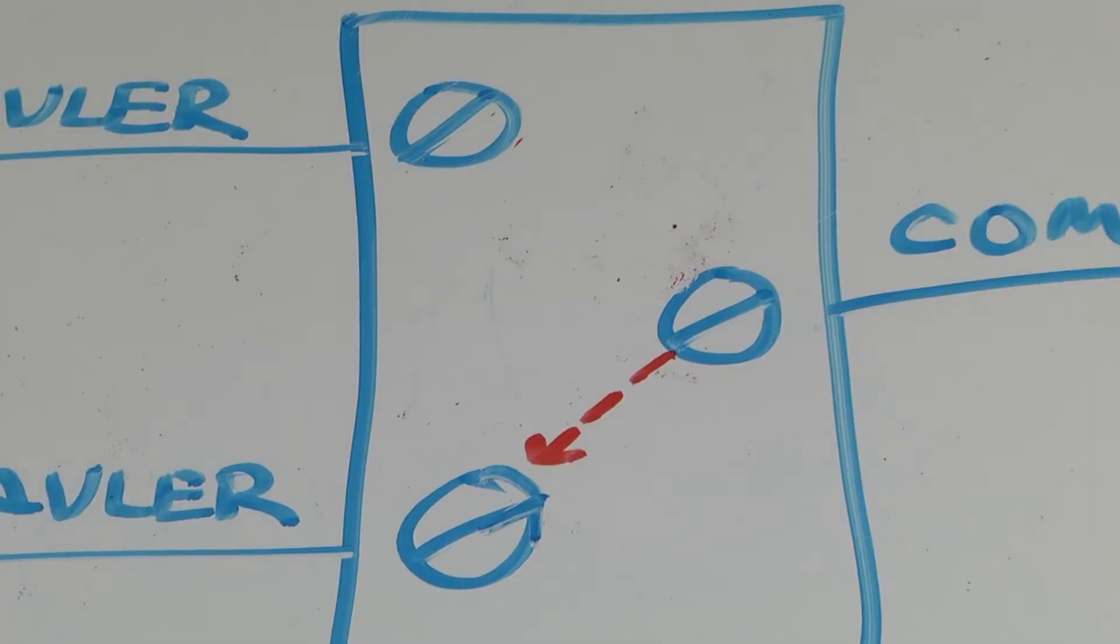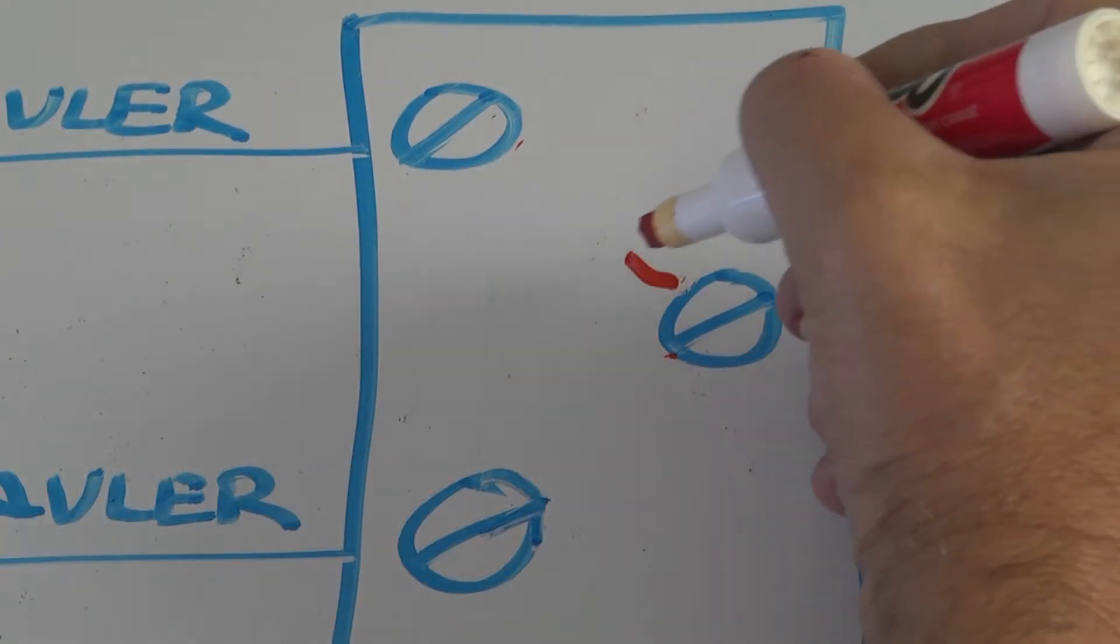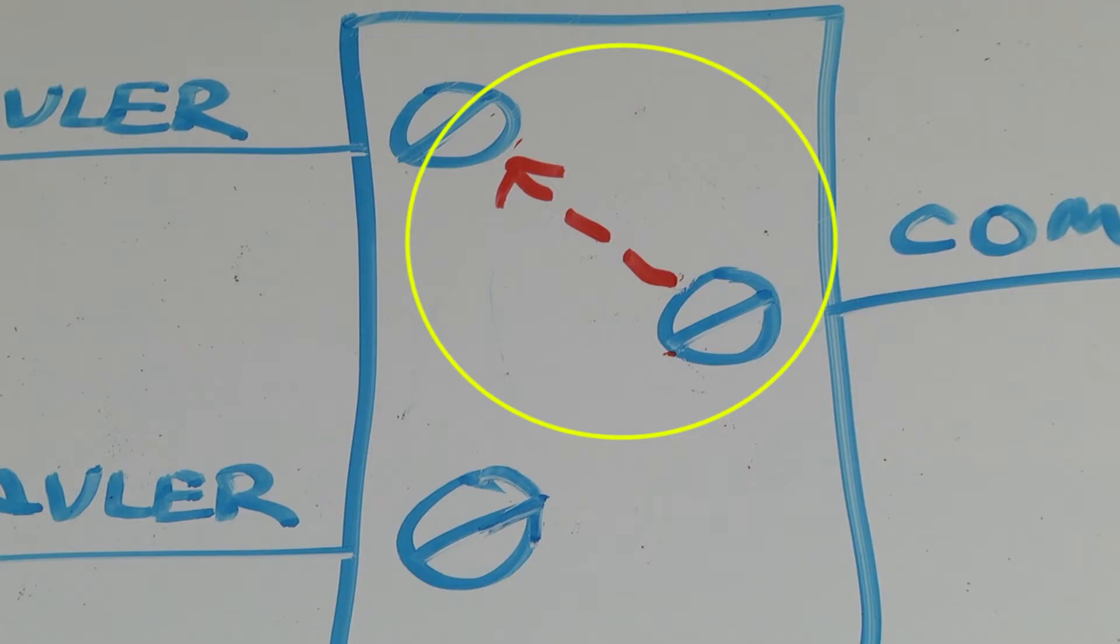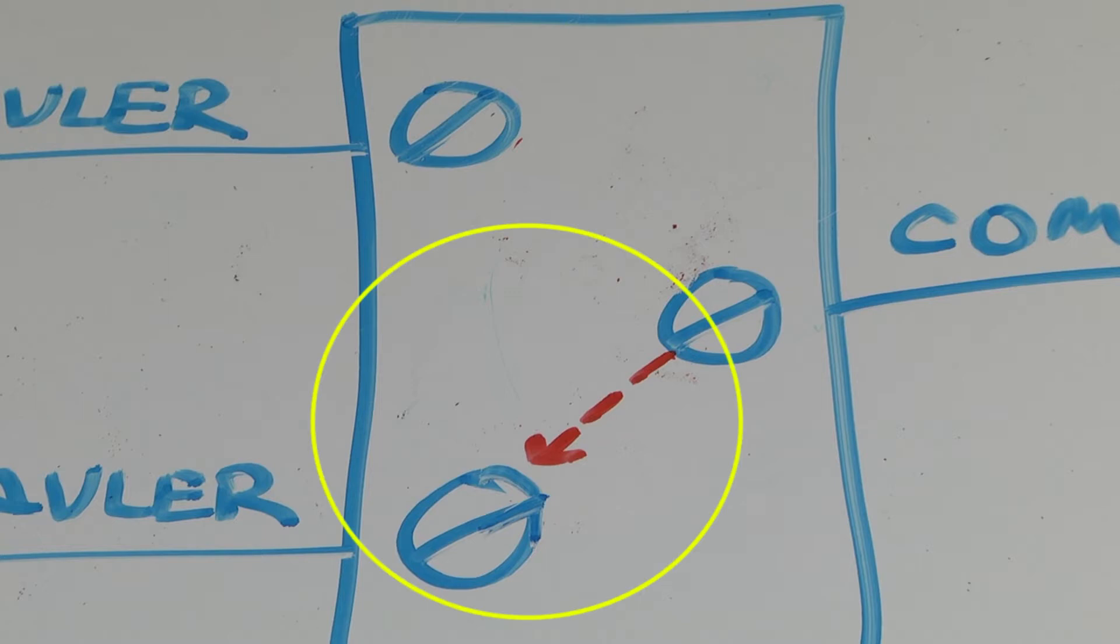In a three-way switch, the common screw is the one that switches the current between one outgoing screw and the other. Switched up, the current flows from the common screw to one of the other screws. Switched down, it disconnects from that screw and the current flows to the opposite screw.